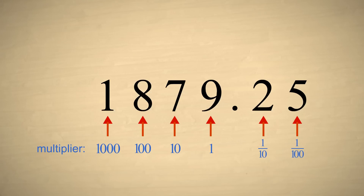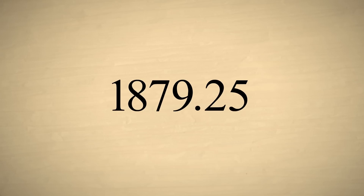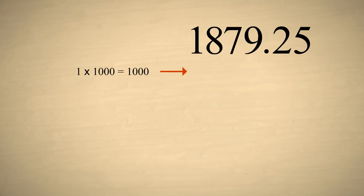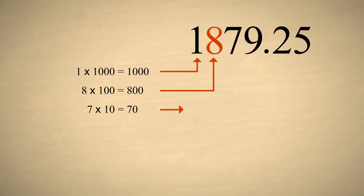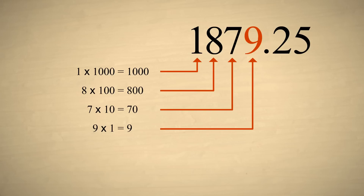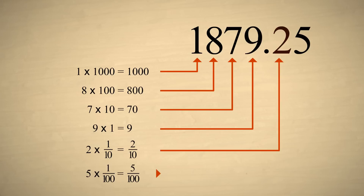Just as with integers, the value of the decimal number is the sum of all its digits times their multipliers. For example, the number 1879.25 represents one thousand, plus eight hundreds, plus seven tens, plus nine ones, plus two tenths, plus five one-hundredths.